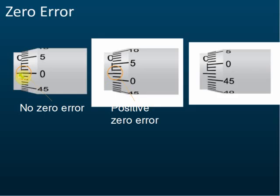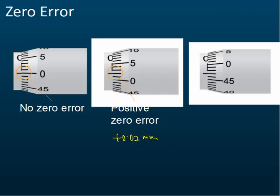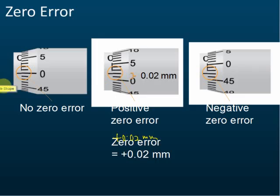Suppose this zero mark coincides with a line, but now this mark at 0.02 coincides with the straight line in the main scale — that means there is a positive zero error of +0.02 mm.